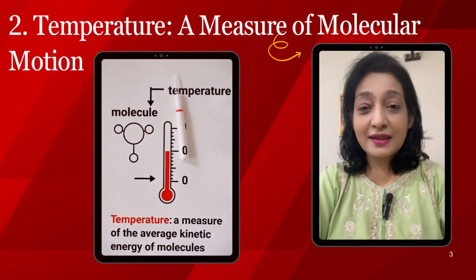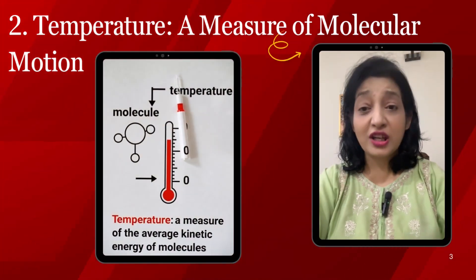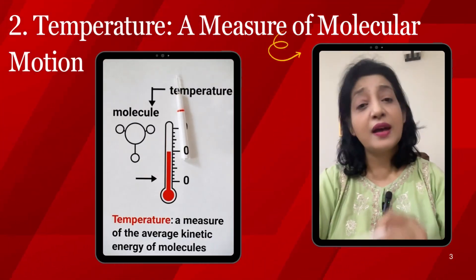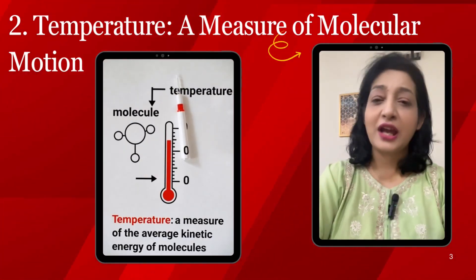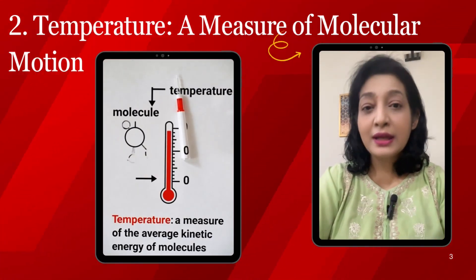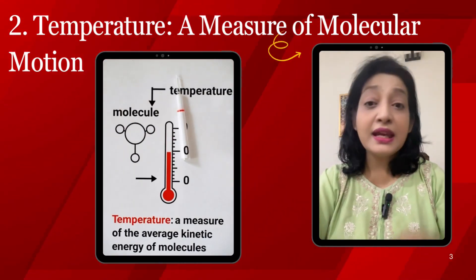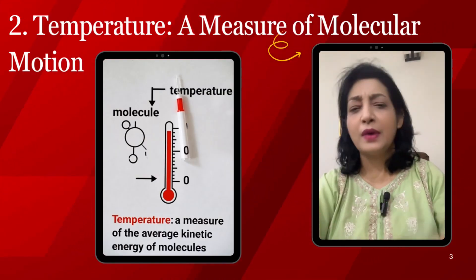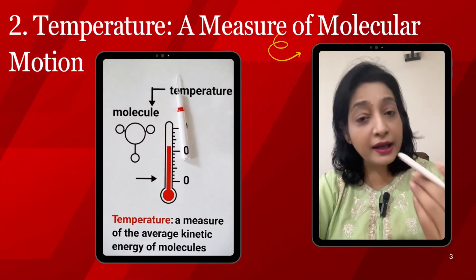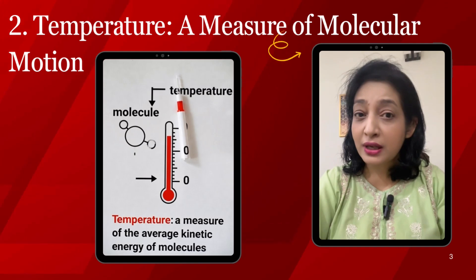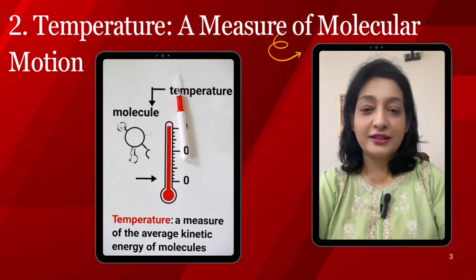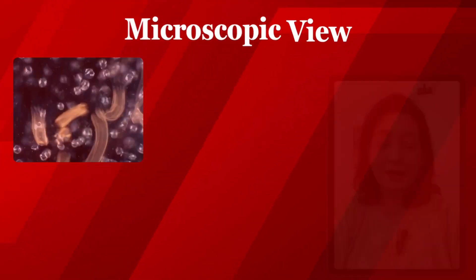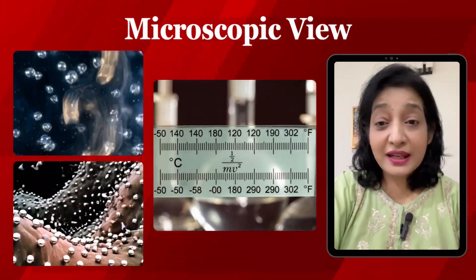Our topic is temperature — a measure of molecular motion. Definition: temperature is a measure of the average kinetic energy per molecule in a substance. It tells us how fast, on average, the particles — atoms or molecules — are moving or vibrating. Higher temperature means faster motion and higher average kinetic energy.